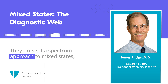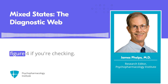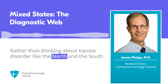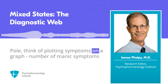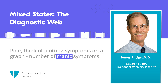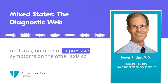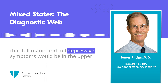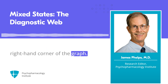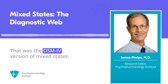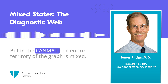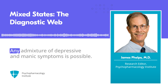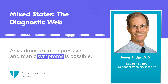They present a spectrum approach to mixed states — figure 4 if you're checking. Rather than thinking about bipolar disorder like the North and the South Pole, think of plotting symptoms on a graph: number of manic symptoms on one axis, number of depressive symptoms on the other, so that full manic and full depressive symptoms would be in the upper right-hand corner. That was the DSM-4 version of mixed states. But in the Chanmat, the entire territory of the graph is mixed — any admixture of depressive and manic symptoms is possible.